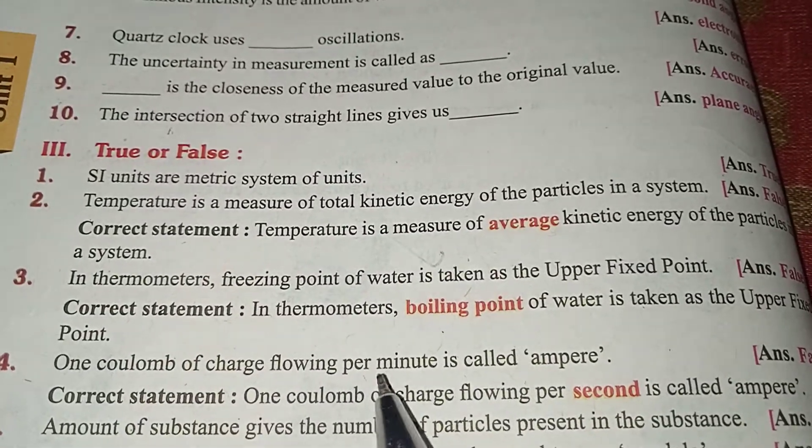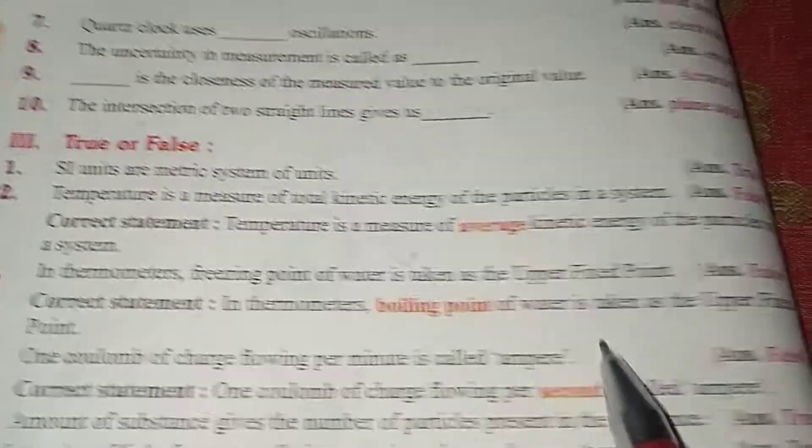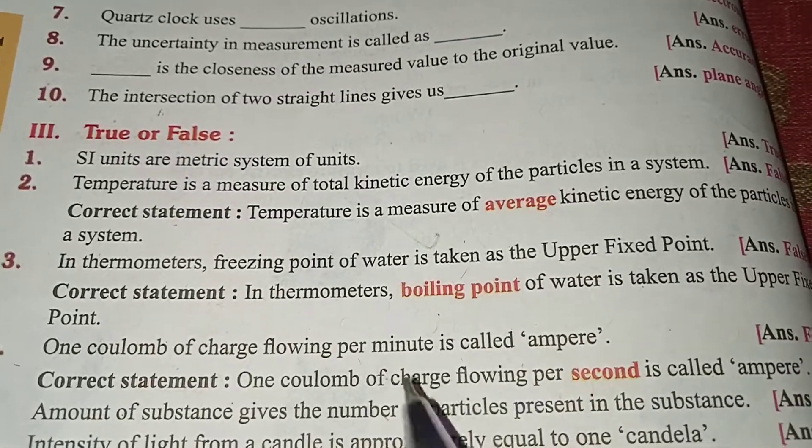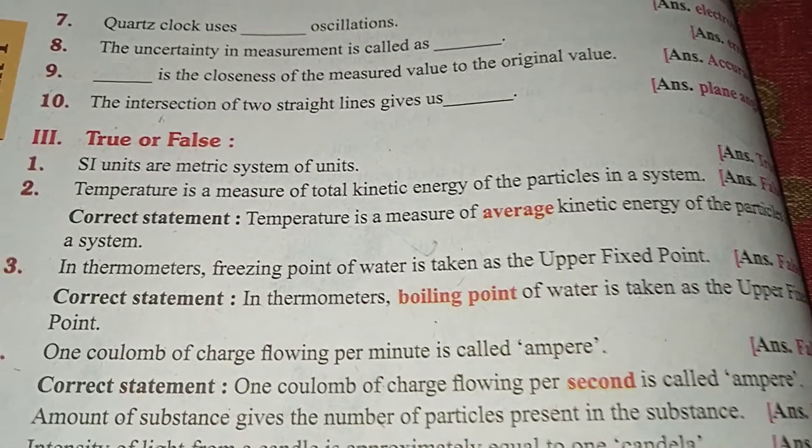One coulomb of charge flowing per minute is called ampere. False. One coulomb of charge flowing per second is called ampere.